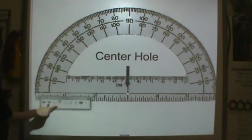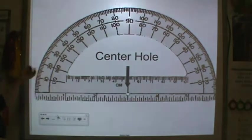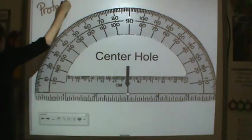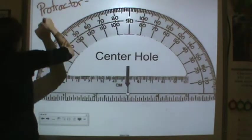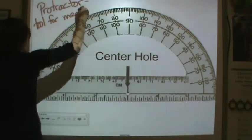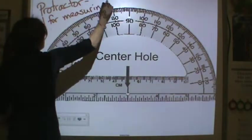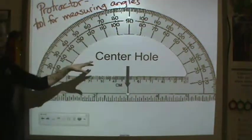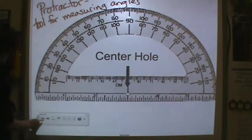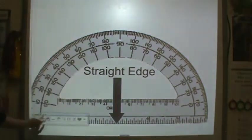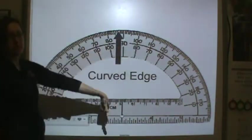Here are some things you need to know about a protractor. This is a protractor. A protractor is a tool for measuring angles, and it has several different parts. You have a center hole right down here, a straight edge at the bottom, and a curved edge at the top.